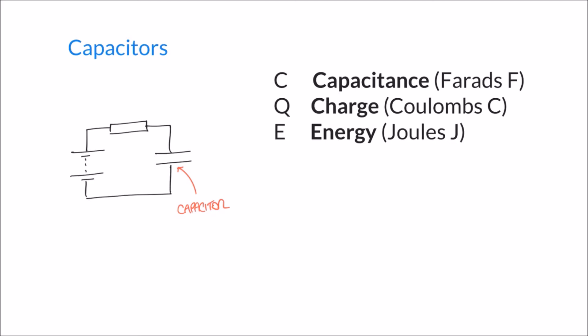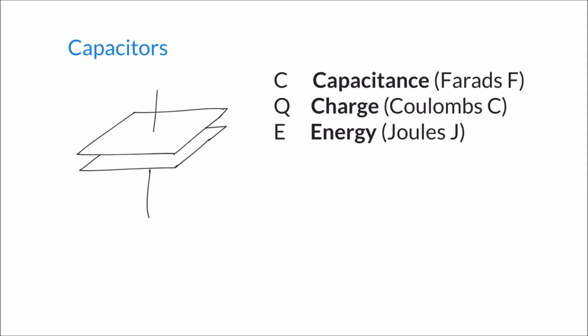Looking at this simple circuit on the left hand side, we've added a capacitor whose symbol is two parallel lines. This reflects the construction of a capacitor — two parallel metal plates separated by a small gap. Capacitors come in many different shapes and sizes, but this construction is consistent among most. The gap between the plates means there's technically a break in the circuit, so normally we'd expect current can't flow.